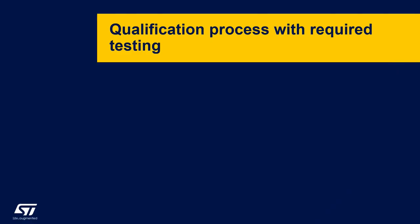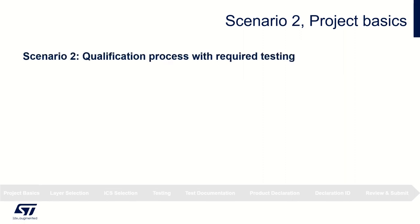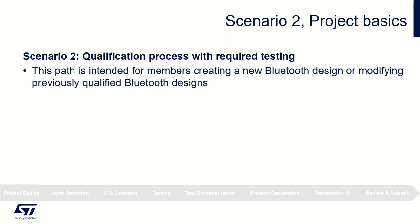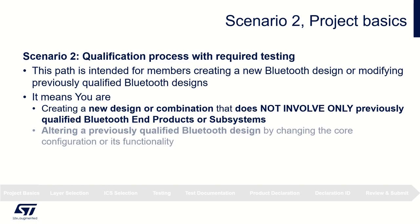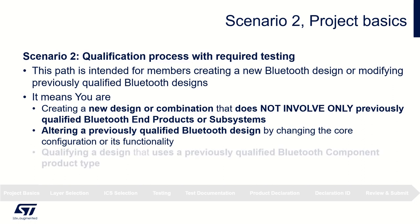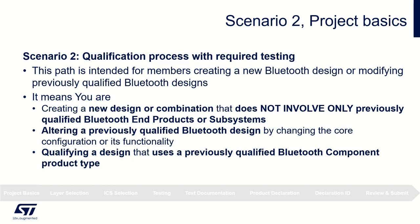For the second path, we will go through the qualification process with required testing in the Launch Studio. This process is rather longer. This path is intended for members creating a new Bluetooth design or modifying previously qualified Bluetooth designs. Use this path if you are creating a new design or combination that doesn't involve only previously qualified Bluetooth end products or subsystems, altering a previously qualified Bluetooth design by changing the core configuration functionality, or qualifying a design that uses a previously qualified Bluetooth component product type.